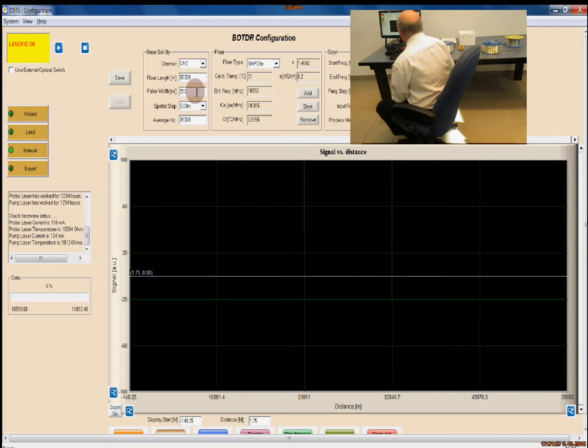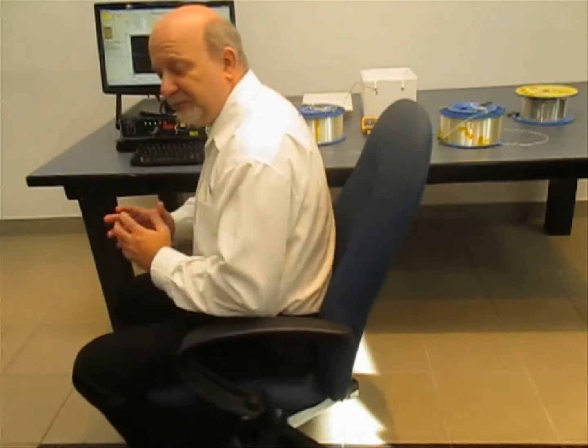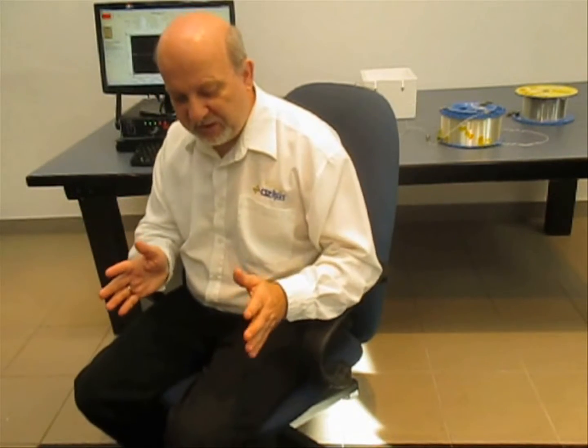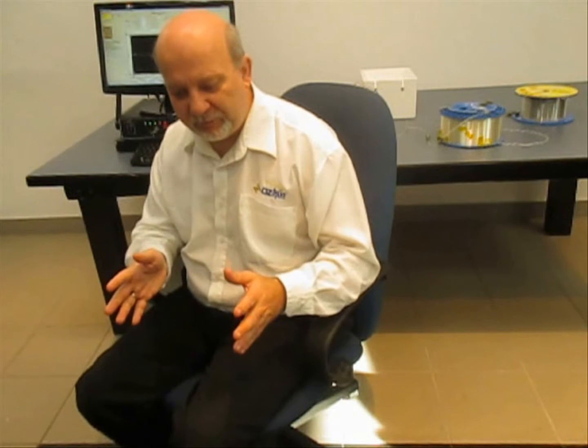Because of the length we're doing, 50 kilometers, we're going with a pulse width of 250 nanoseconds. This is the recommended pulse width for dealing with fibers this long. And it means that our resolution of our instrument is 25 meters. We're able to detect changes in strain or temperature over a section of fiber 25 meters long, anywhere along the 50 kilometers of fiber.